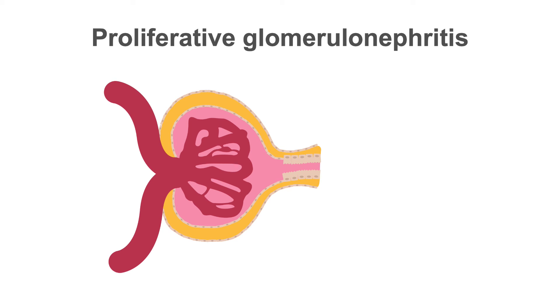In proliferative glomerulonephritis, there is an increase in the number of cells in the glomerulus including endothelial cells in the capillaries, epithelial cells from Bowman's capsule and mesangial cells in the interstitium of the glomerulus.